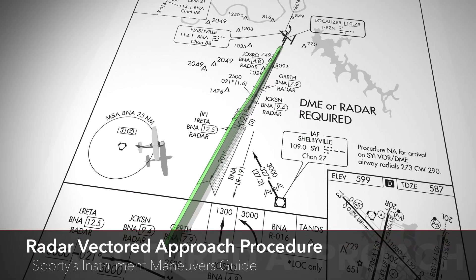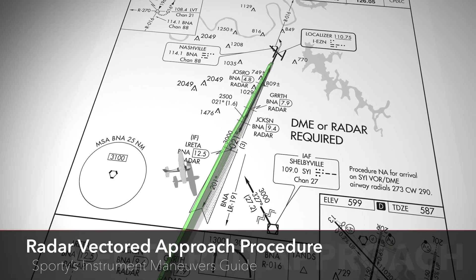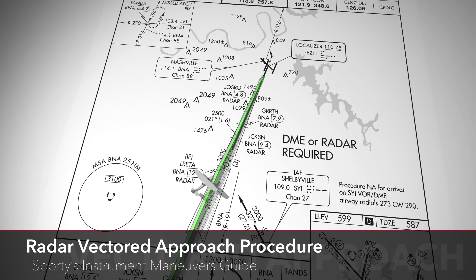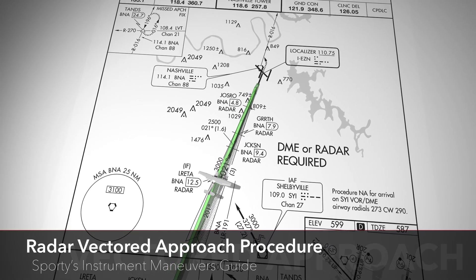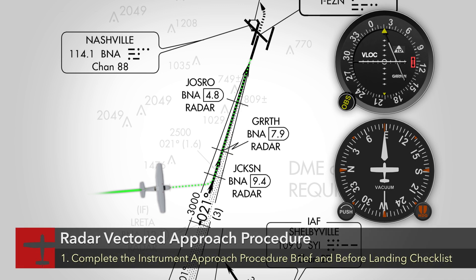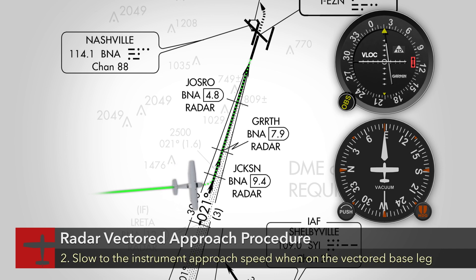When flying an instrument approach in a radar environment, ATC will normally vector you onto the final approach course at a point outside the final approach fix. First, complete the appropriate instrument approach procedure approach brief and the before landing checklist. Reduce airspeed when necessary so as to be at the instrument approach airspeed on the vectored base leg.